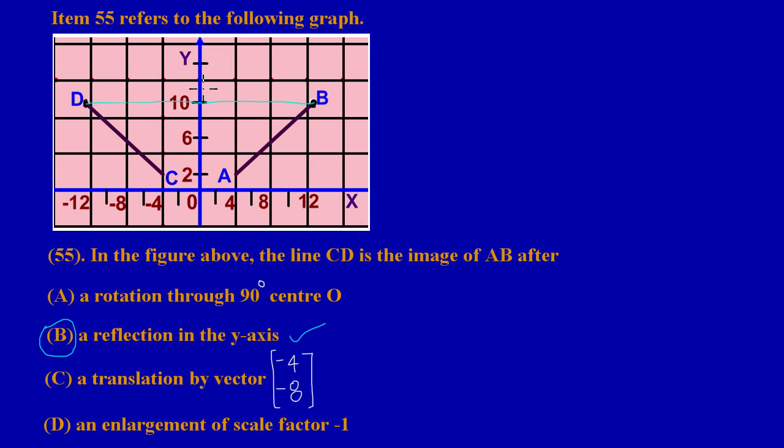If you notice, when a line is drawn from an object point to its corresponding image point, at the point where it cuts the mirror line—in this case the y-axis is the mirror line—it forms a right angle. Or you can say that line drawn from the object point to its corresponding image point is perpendicular to the mirror line, meaning it cuts it at an angle of 90 degrees.